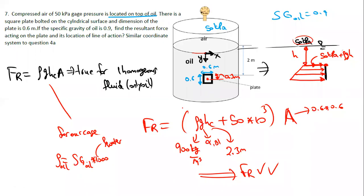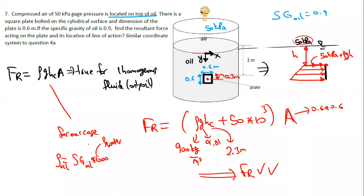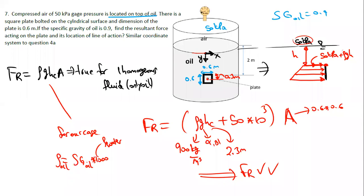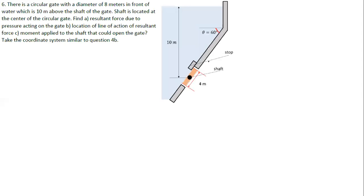Now I'm going to find the location of the resultant. In other words, ycp. If you remember from the last lecture, we said that ycp is lower than yc. So if this is the yc value, the ycp will be somewhere below it. ycp is a distance - the y coordinate to the location of the resultant force of the oil. Now the formula, if you remember: